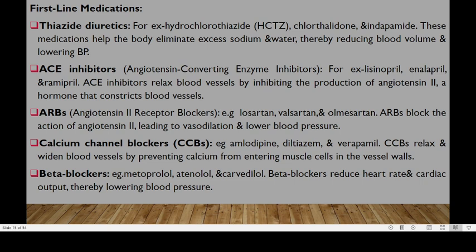If you fail to respond to lifestyle modification, the physician will prescribe first-line drugs to control your increased BP. This could include thiazide diuretics like hydrochlorothiazide, chlorthalidone, and indapamide. These help the body eliminate excessive sodium in exchange for calcium, thereby reducing blood volume and lowering blood pressure. Or we can give ACE inhibitors — angiotensin-converting enzyme inhibitors — including lisinopril, enalapril, and ramipril — the 'prils.' These drugs help blood vessels relax by inhibiting production of angiotensin II, the hormone responsible for constriction of blood vessels.